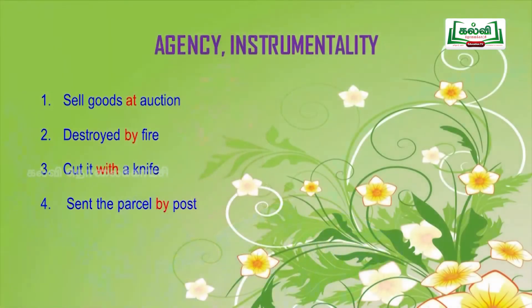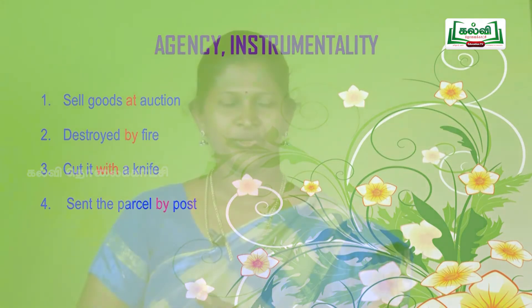Next, we are going to see examples for agency and instrumentality. First: 'sell goods at auction.' Second: 'destroyed by fire.' Third: 'cut it with the knife.' Fourth: 'send the parcel by post.' I think you can now identify the prepositions.